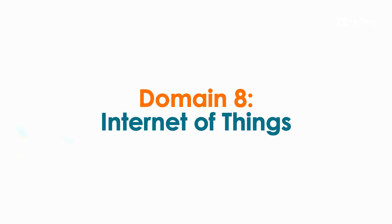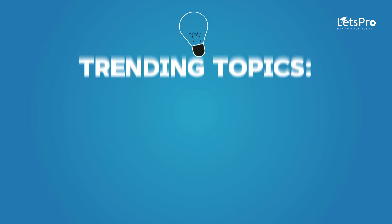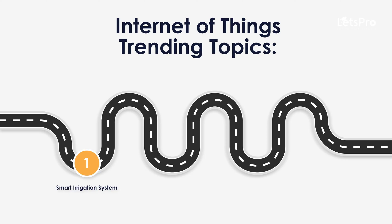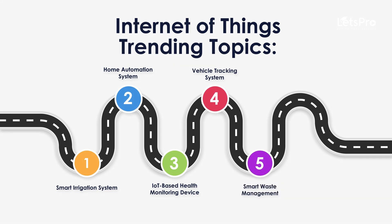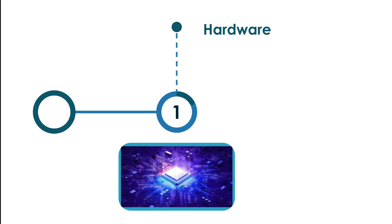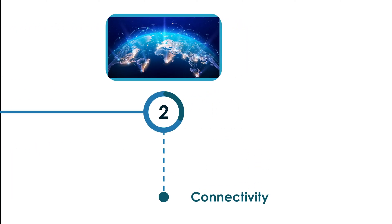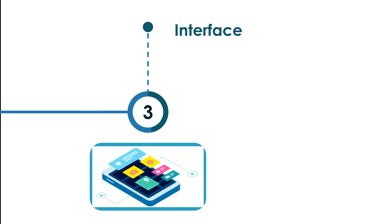Domain 8: Internet of Things. IoT connects devices to the internet, enabling automation and data collection. Trending topics include: a Smart Irrigation System that automates watering based on soil moisture; a Home Automation System to control lights and fans remotely; an IoT-based Health Monitoring Device to track vital signs in real time; a Vehicle Tracking System using GPS; and Smart Waste Management to track waste levels in bins. Use Raspberry Pi or Arduino for hardware, Wi-Fi or MQTT for connectivity, and develop a mobile or web dashboard for monitoring.